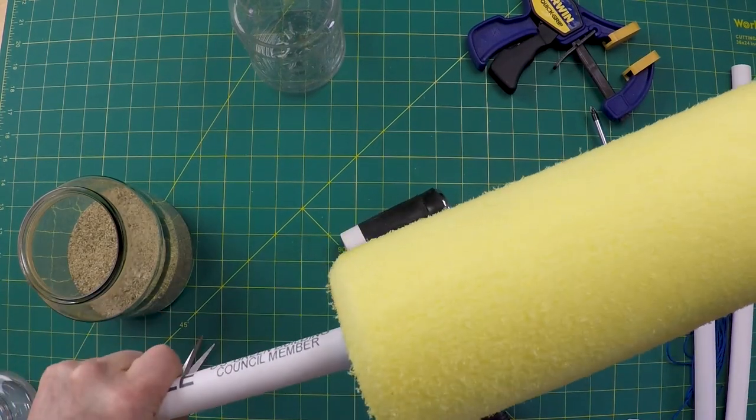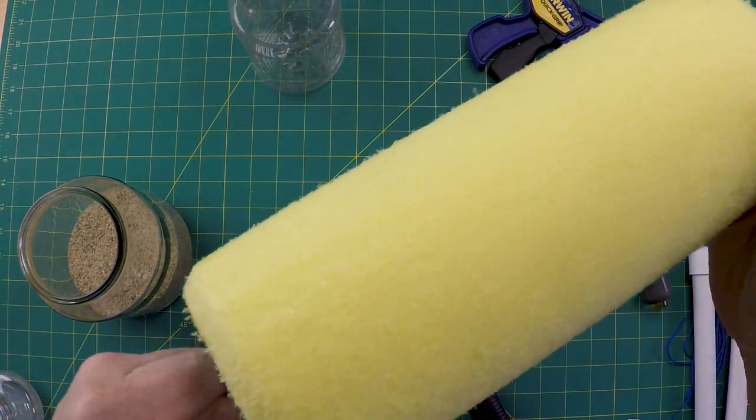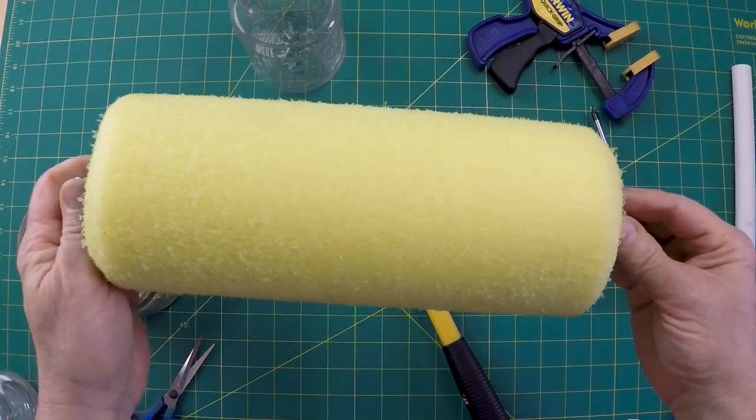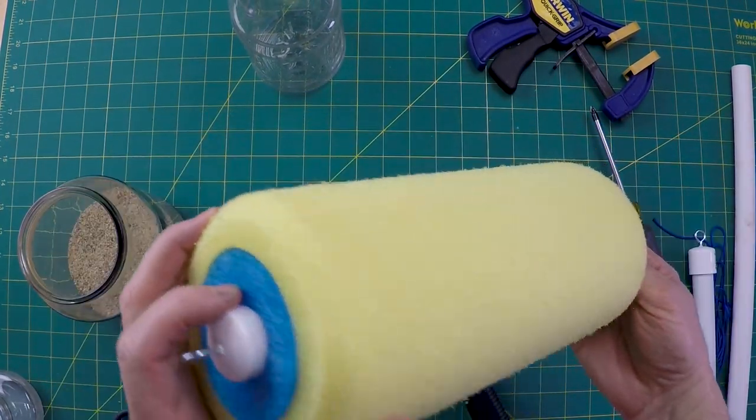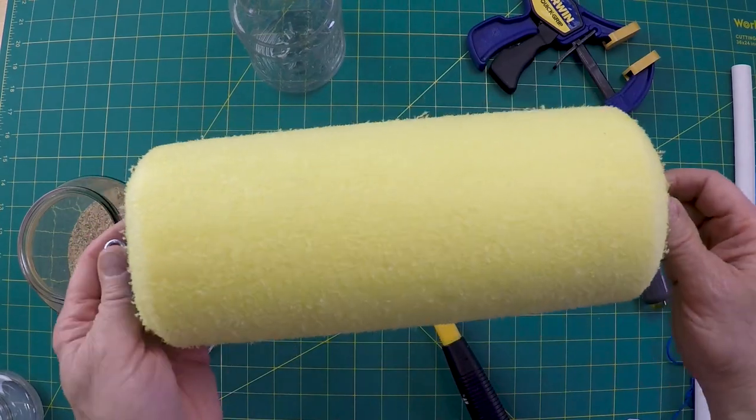And that's snug. It's not going in there easy. Now it's moving around a little bit. So I might have to actually glue that in place. Or just wrap it with tape on either end. That would work too.